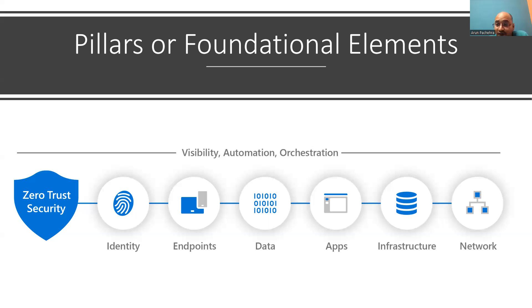Then infrastructure — where your applications run and where your data is. Whether it's on-premises or cloud-based infrastructure, including VMs, VMSSs, containers, or microservices, that's your infrastructure. Nowadays we deploy infrastructure with templates or scripts — maybe Terraform or ARM templates — so we should have these configurations checked and security applied to them already. We should have version assessment for those scripts and configurations, and also use JIT. We should use telemetry to detect attacks and anomalies and automatically block and flag risky behavior and take protective actions.